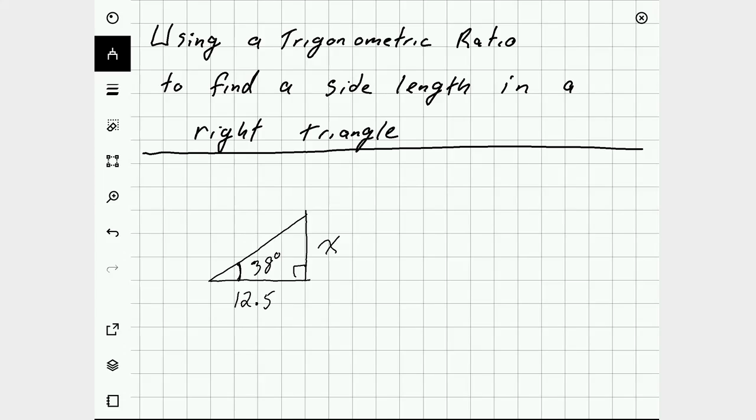Using trigonometry, we can set up an equation to find this missing ratio or this missing side.